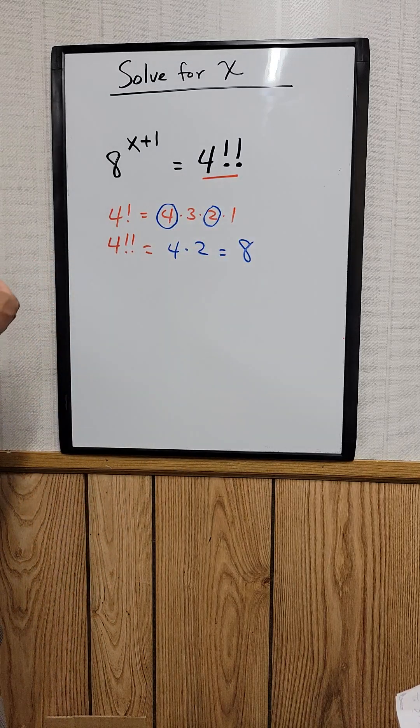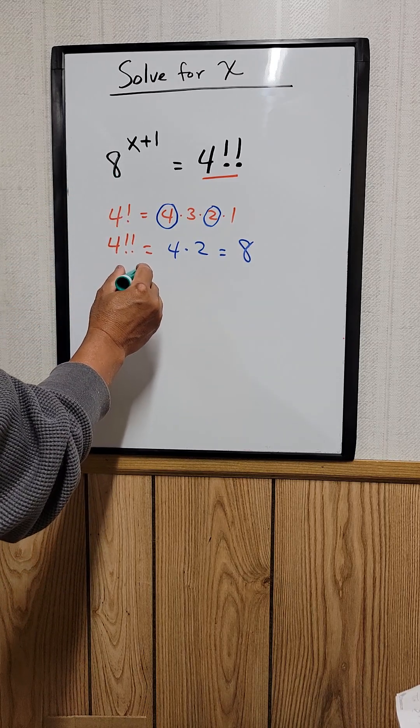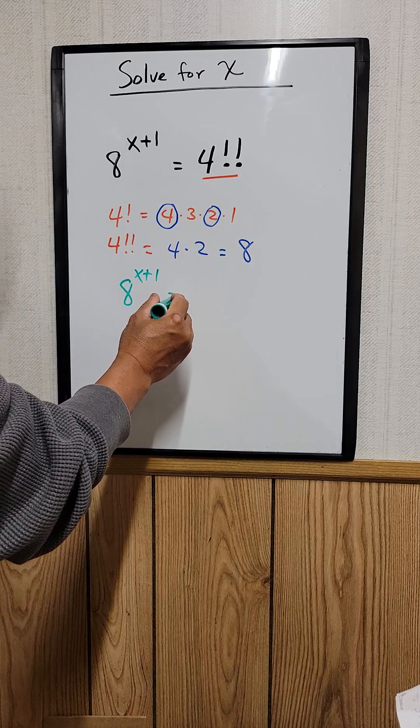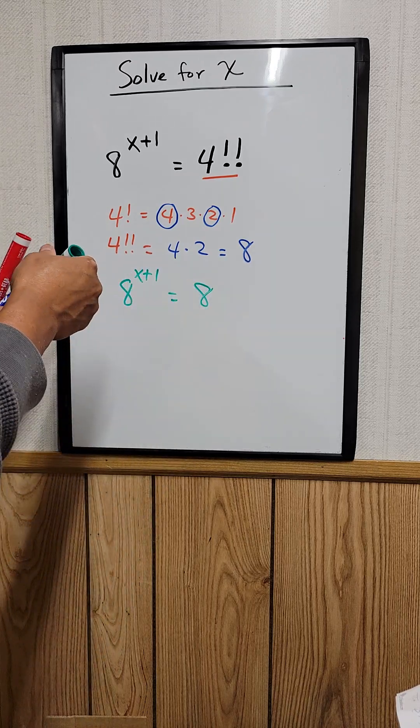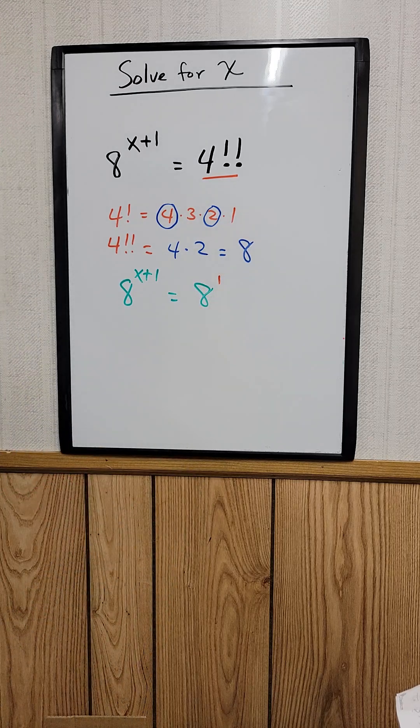Now we can rewrite this equation. 8 raised to the power x plus 1 is equal to 8, or 8 raised to the first power.